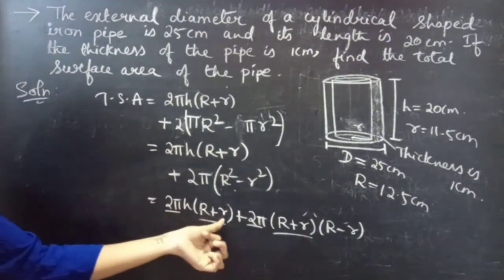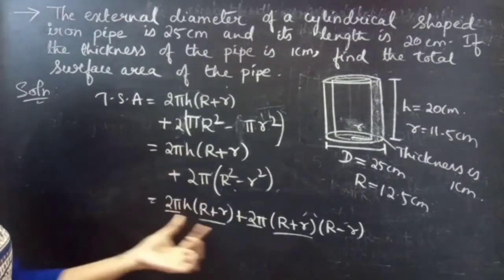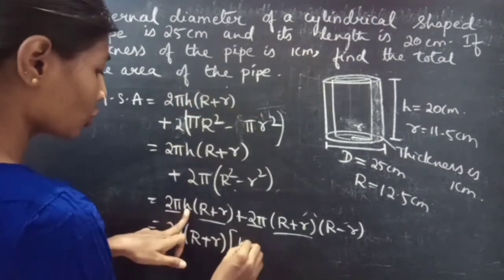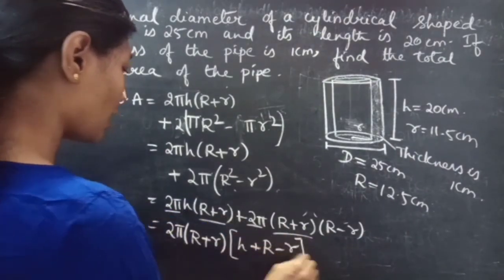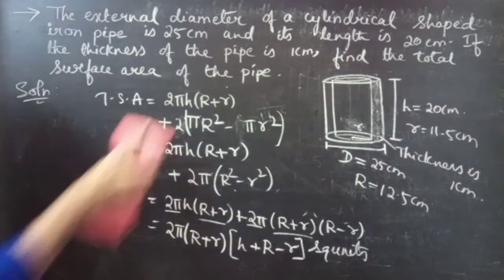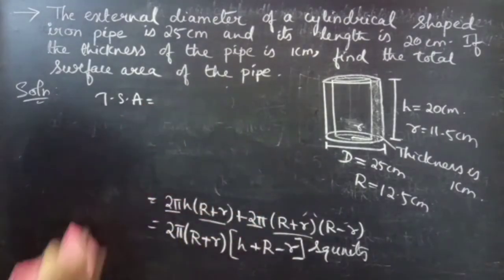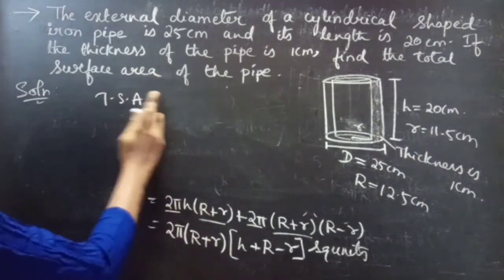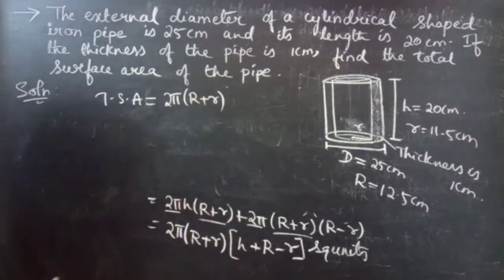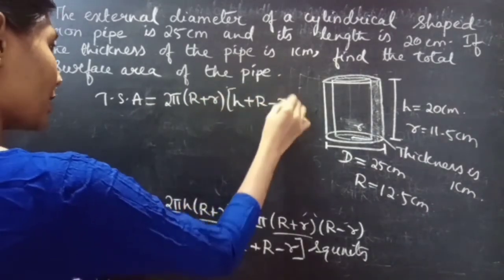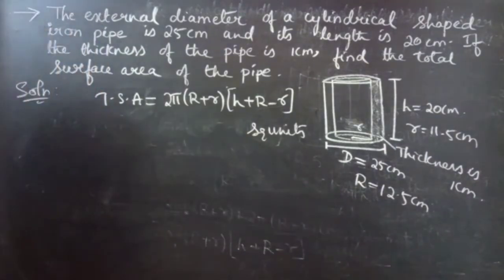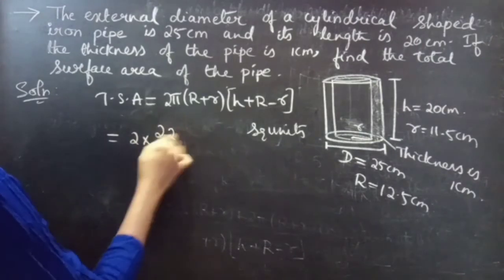Taking 2π and (R + r) common from both terms, the formula simplifies to 2π(R + r)(h + R − r) square units. So instead of using the formula directly, you can derive it from the figure — that will be easy and you will not make any mistake.